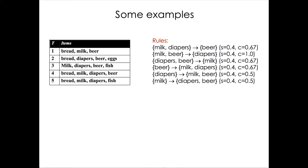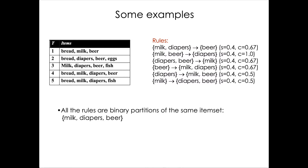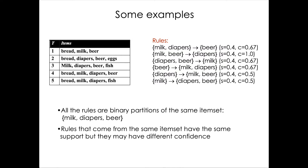From one frequent item set — for example, milk, diapers, and beer — we can create several rules, because all the rules are binary partitions of the same item set. It's important to note that all of these rules share the same support, since support is calculated by combining all items of the rule and they all come from the same item set. However, they have different confidence values, because confidence depends on the items on the right-hand side.